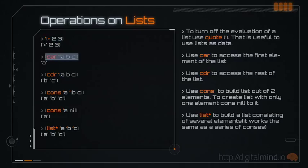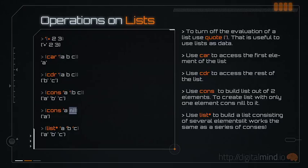You can use car to access the first element of a list, and cdr to access all the rest of the elements. By stringing them together, you can access any element in the list. To create lists, you can use cons. Cons combines two elements into a new list. In Lisp, the symbol nil represents an empty list. So if you want to create a list containing only one element, you use cons to combine that element and nil. If you want to create a list with several elements, you can use the list* function, which simply uses a series of cons to combine all the elements together.